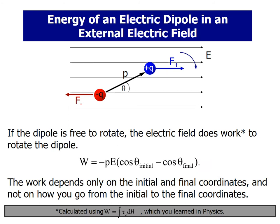If the dipole is free to rotate, the electric field does work to rotate the dipole. The work done is equal to minus PE (cos theta initial minus cos theta final). This depends on its initial and final coordinates. We can calculate it as W equals integral of torque d theta. This is basically the work done.